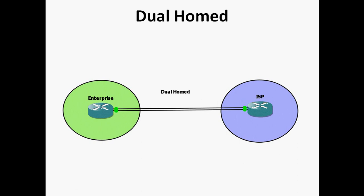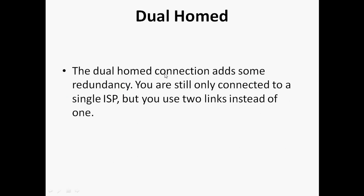Next is dual home. Dual home means we use a redundant link to the ISP. The slight variation from the previous scenario is that instead of a single cable, we use dual cables. The customer is still using a single ISP, but uses two links instead of one. If the ISP router goes down, the customer completely loses the internet connection, so dual home adds some redundancy but is still connected to only a single ISP.